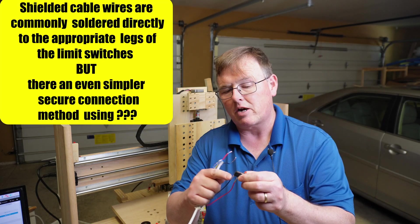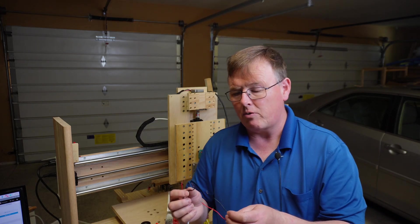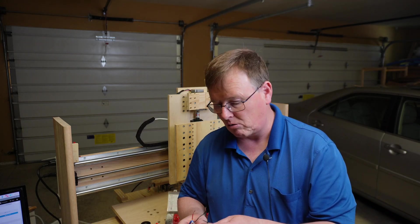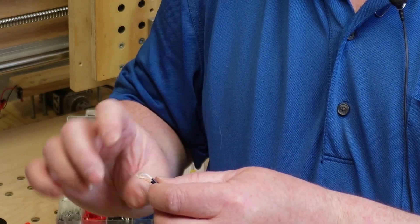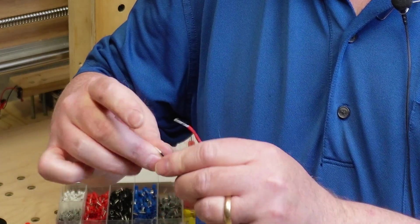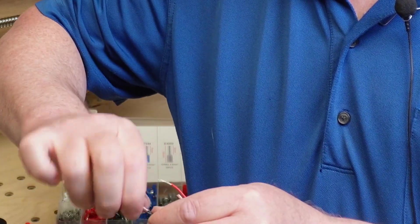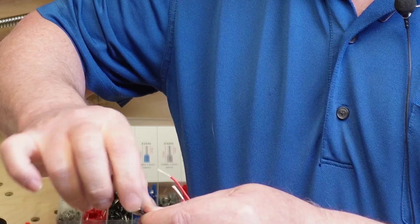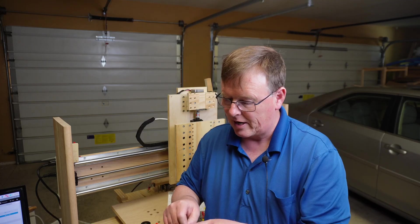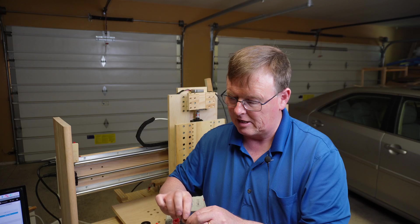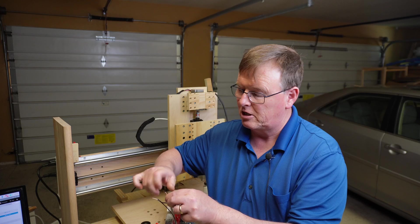Typically, people would solder on directly onto this, and that's fine. You can certainly do that. But once again, I like to be able to disconnect. So is there an easy way to do it without just soldering on here? And the answer is yes. What we're going to do is we're going to take the wires and we're going to line them up and we're going to twist them together. If you use pincher nose pliers, you can get a tighter twist. So I have those twisted together.